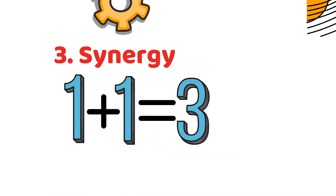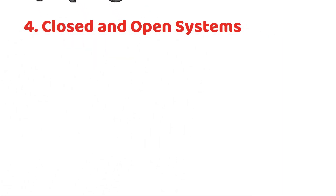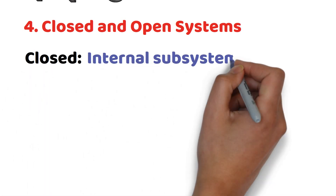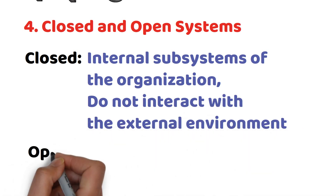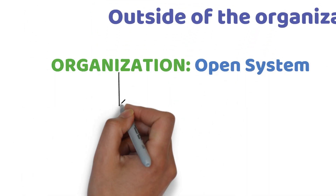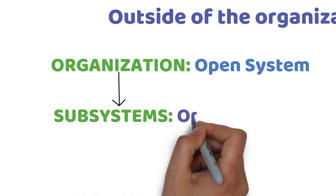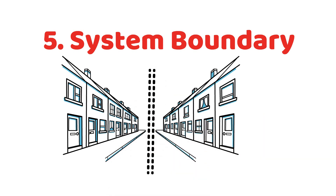Number four, closed and open systems. Closed systems are the internal subsystems of the organization that do not interact with the external environment. Open systems are those that interact with other systems outside of the organization. The whole organization is an open system made up of a combination of subsystems, which may be open or closed. Number five, system boundary — the organization is separate from the external environment with a boundary, and the external environment is made up of other systems.